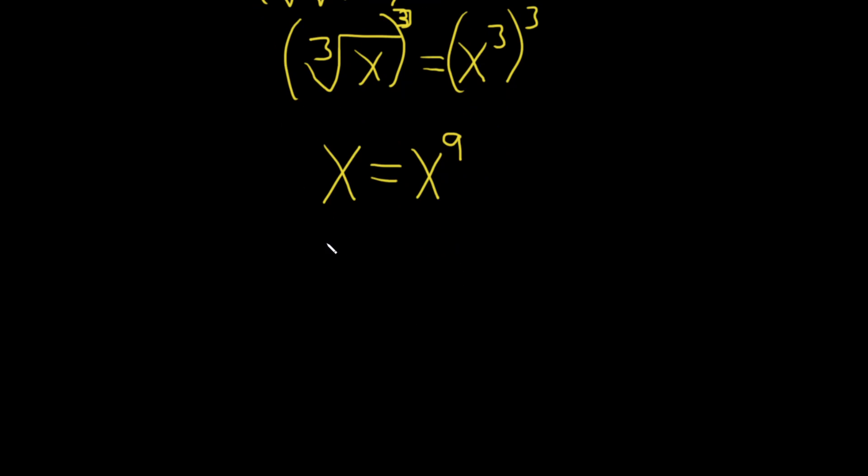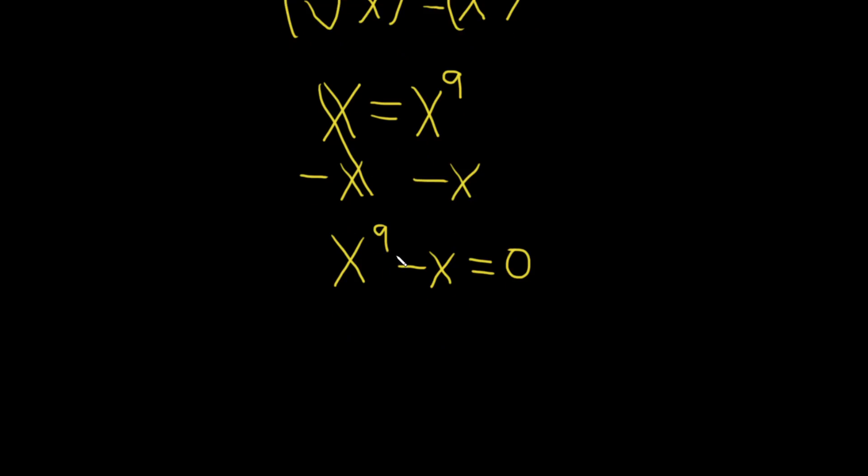Now what we'll do is we'll set this equal to zero and try to factor. It's usually a good strategy with equations. So minus x and then minus x over here. That's going to leave us with x to the ninth minus x and that's equal to zero. Because I'm just taking the zero and writing it over here and then x to the ninth minus x I'm writing that on the left hand side.